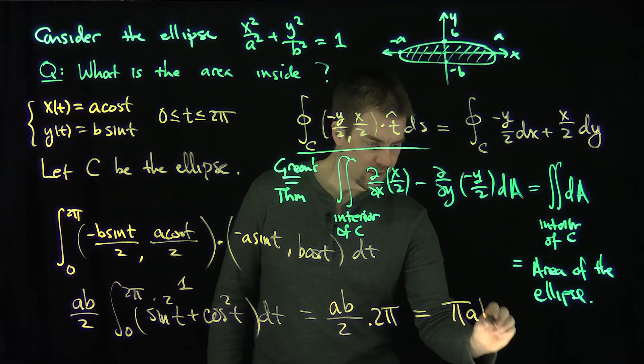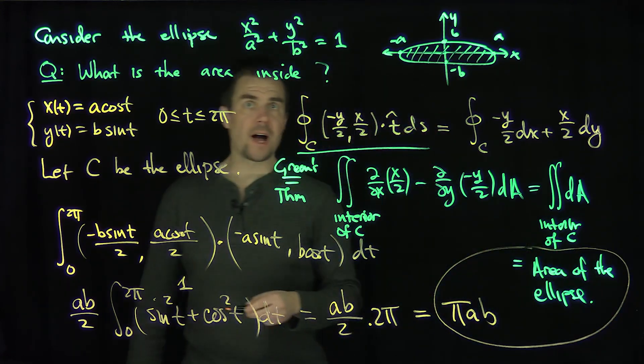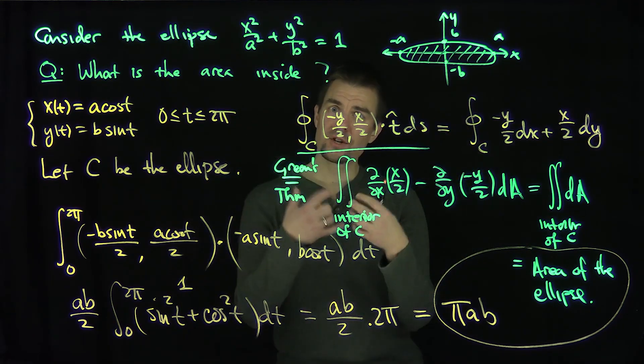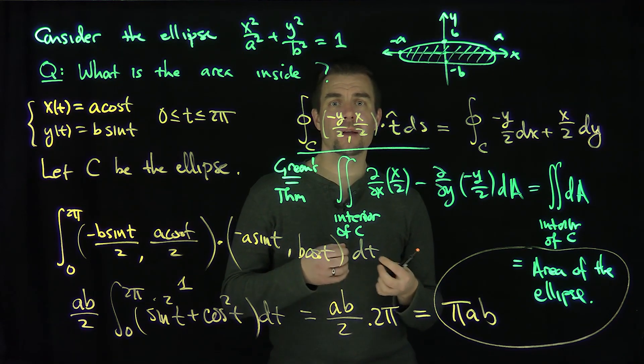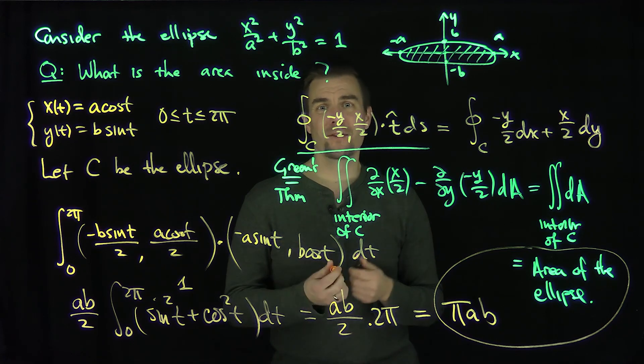So the area inside of the ellipse x squared over a squared plus y squared over b squared is equal to 1. The area interior of that ellipse is pi times ab, which we can say is pi times the length, half the length of the major axis times half the length of the minor axis. Thank you very much.